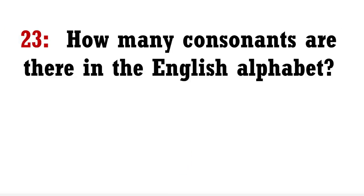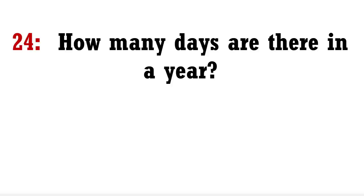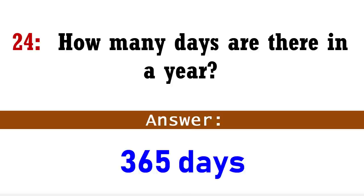How many consonants are there in the English alphabet? Answer: 21. How many days are there in a year? Answer: 365 days.